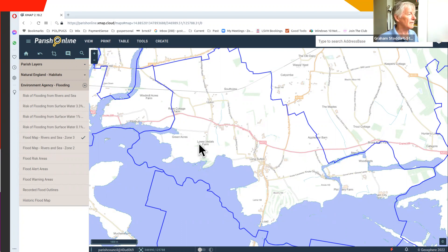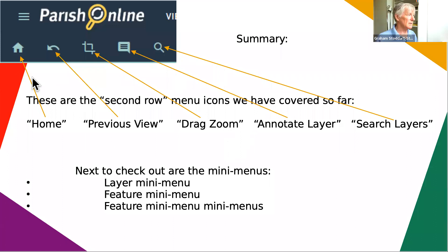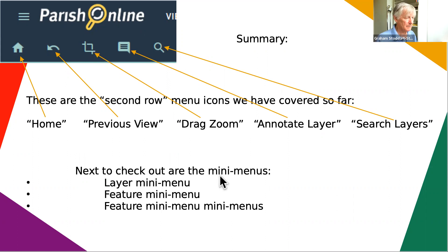So just doing a summary: we've been through home to get you back to where you want to be, previous view to go back as many steps as you like, drag zoom to highlight a specific thing with left-click and drag, annotate layers to bring up all annotated layers at once with one button, and search layers where we typed in flood to find relevant layer collections.